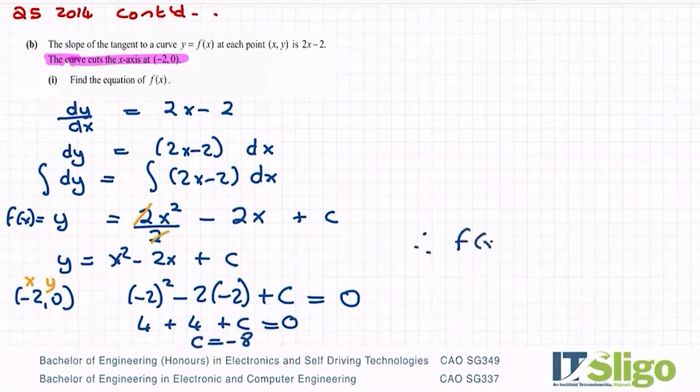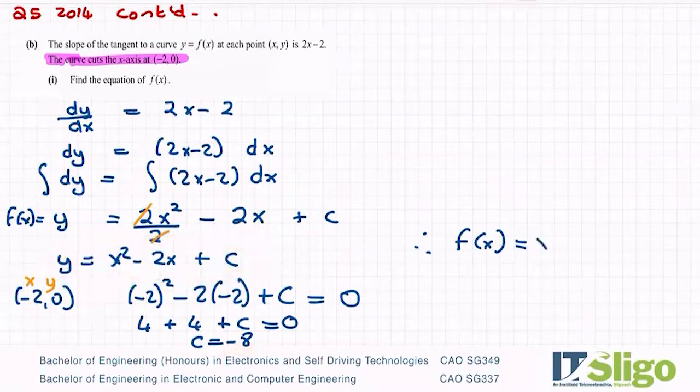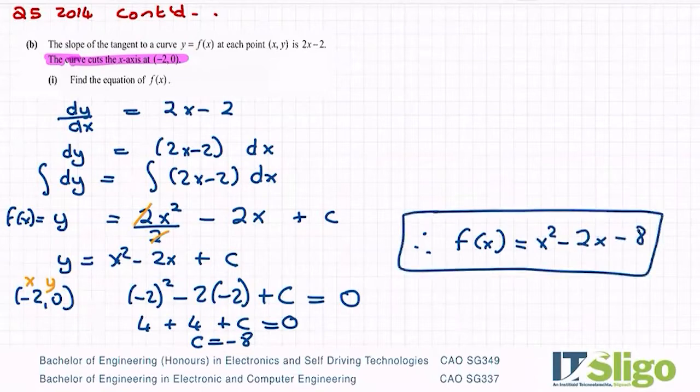Therefore, f of x, my original function, I'm going to put that minus 8 in here and I'm going to just rewrite this out. So it's equal to x squared minus 2x minus 8.